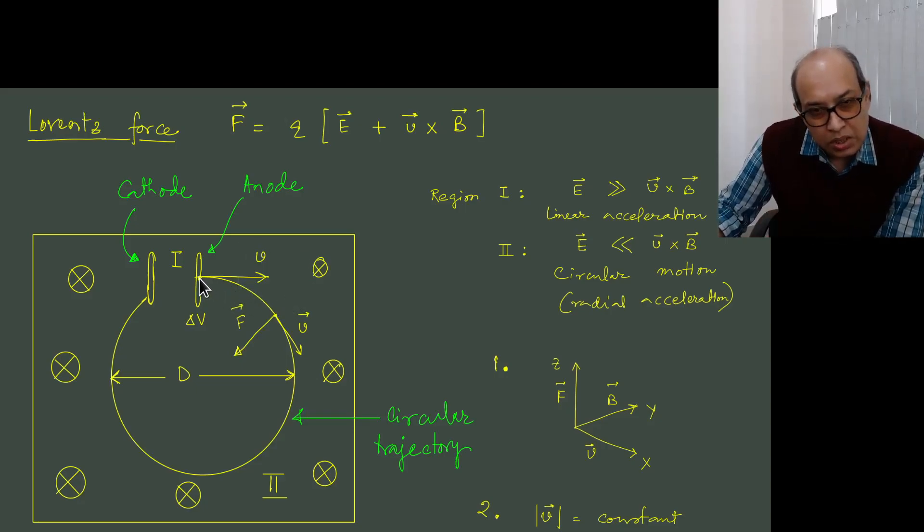So the electron with some velocity as it comes out from the anode as the beam, it experiences the Lorentz force, the magnetic part, the V cross B part. So inside region 1 the electric field is very strong, we can ignore the magnetic field contribution. On the other hand, as the electron comes out of anode it is in region 2 where the magnetic field contribution is much stronger, the electric field is nearly negligible.